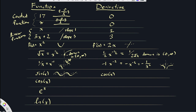Sine goes up and down — it passes through the origin. The derivative is cosine of x. The cosine of x starts up at 1 and then does the same up-down pattern. In fact, the graph of cosine of x is the same as the graph of sine of x, just shifted to the left by π/2.